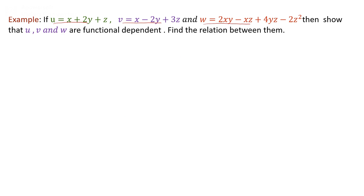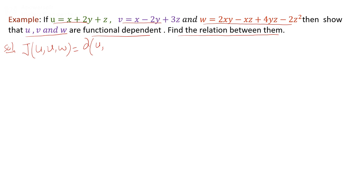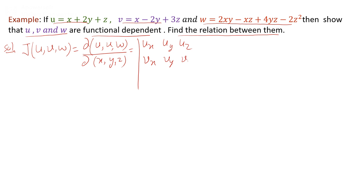One more example: given three functions u, v, and w, we have to show that u, v, w are functionally dependent and also find the relation between them. If these functions are dependent, they establish a relation between them. To check the dependency, we find the Jacobian of (u, v, w), that is the partial derivative of u, v, w with respect to x, y, z, and compute the determinant.